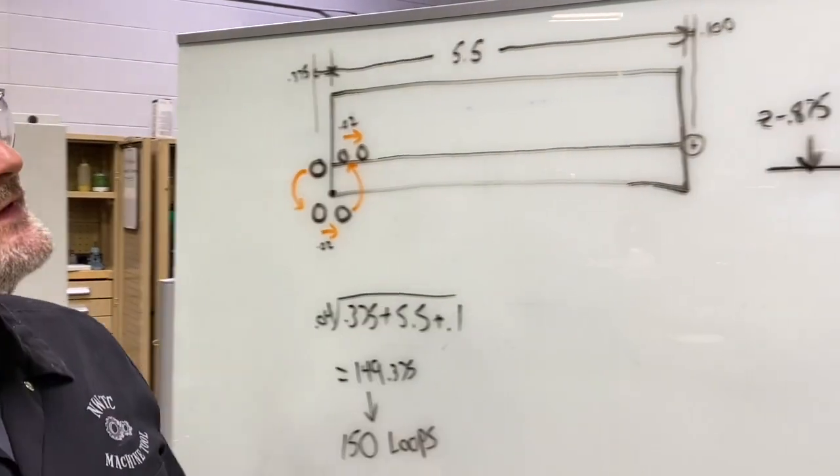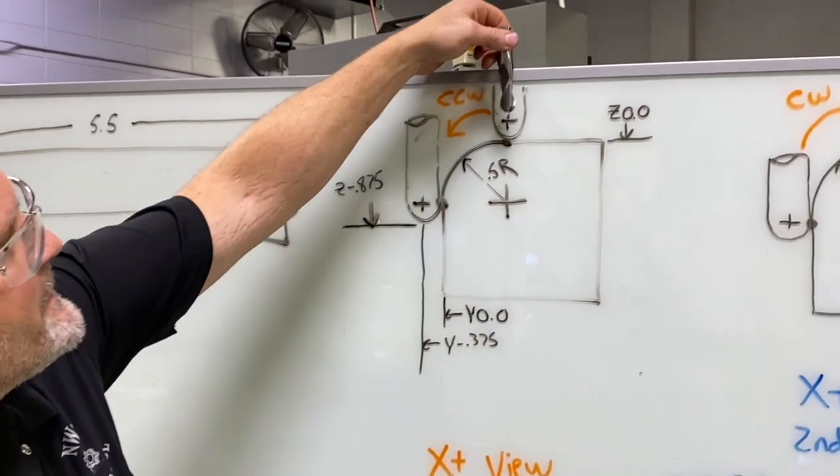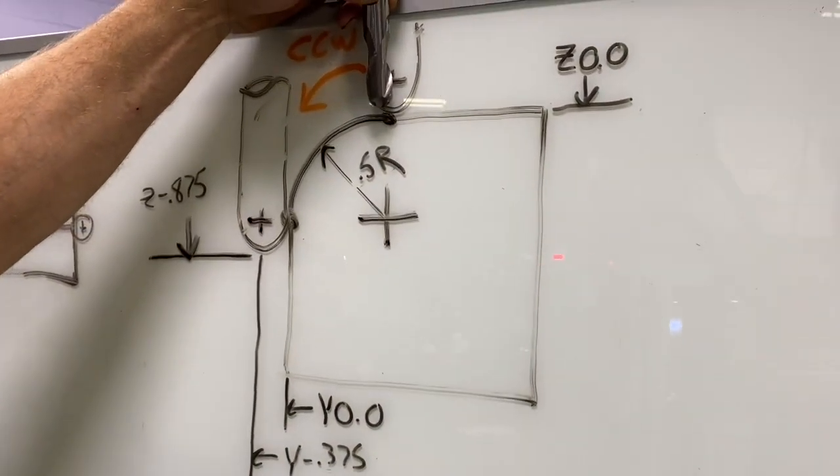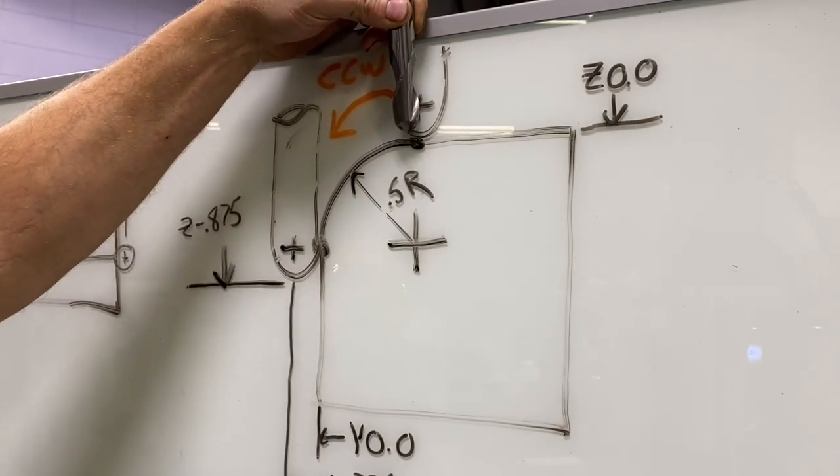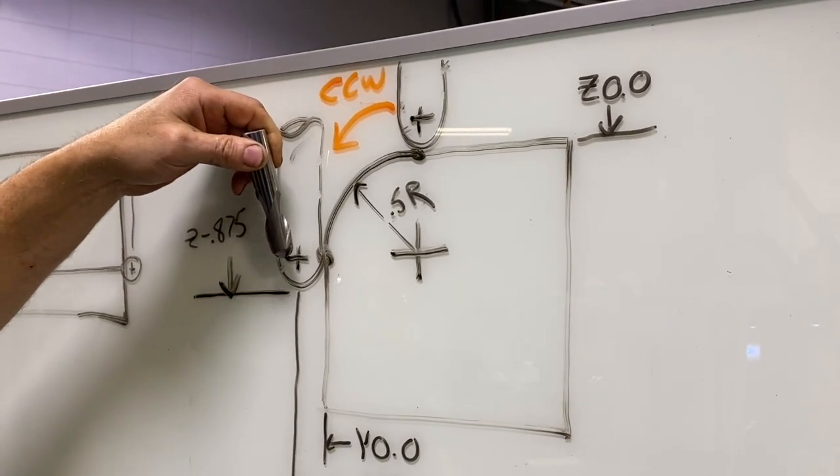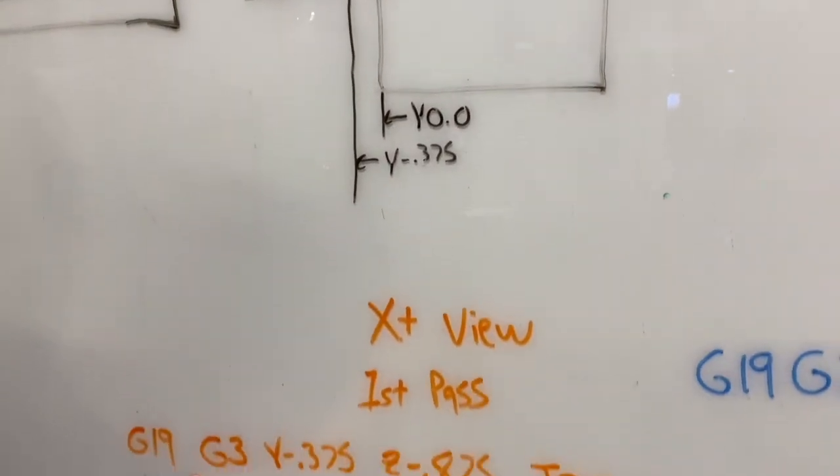So looking over at the next step here, again our first pass, we're starting at the top of our part with the center of the tool lined up with the tangent point of the arc, and we're going to be doing a counterclockwise move bringing the tool to this position. So essentially that line of code is going to look similar to this.